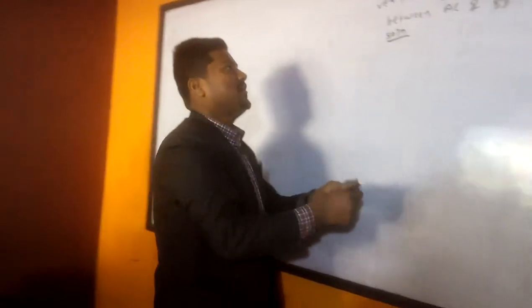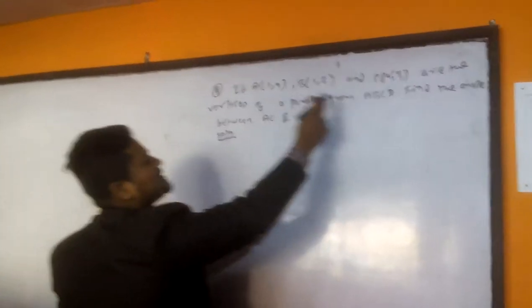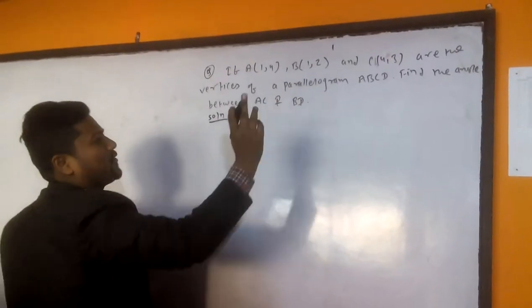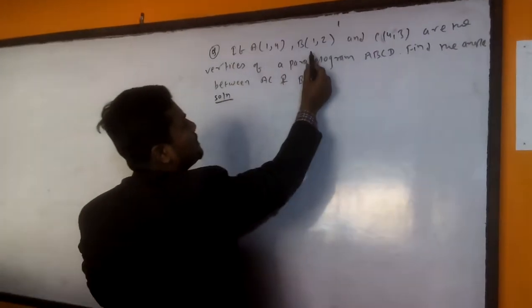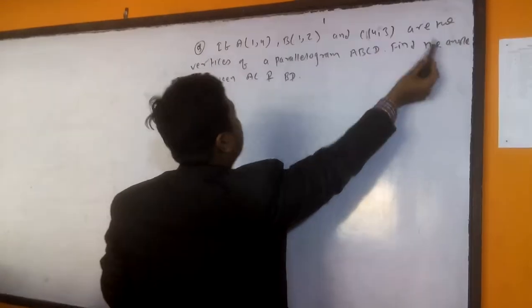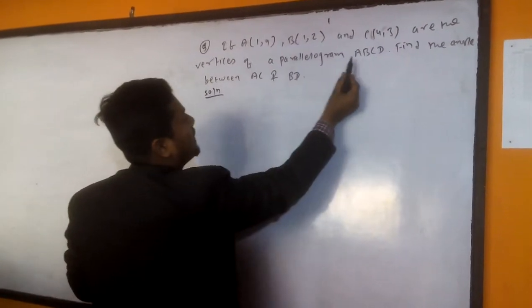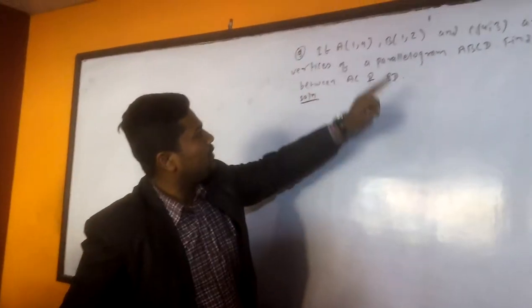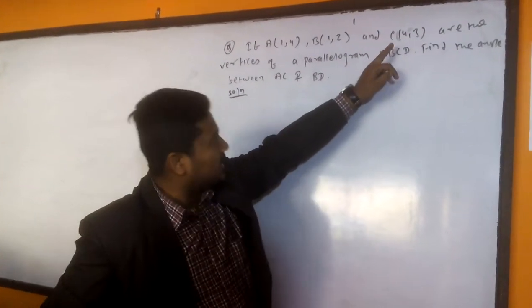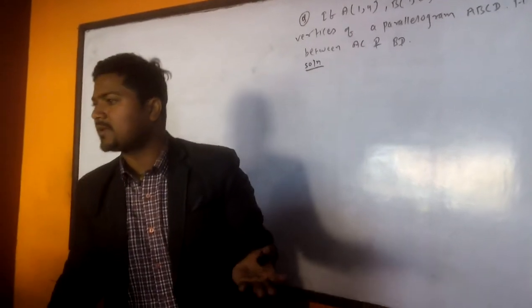Yes sir. Okay, now, ladies and gentlemen, A, B, C are the vertices of the parallelogram ABCD. If A, B and C are the vertices of the parallelogram ABCD, I think you are thinking A coordinate is 1 comma 4, B coordinate is 1 comma 2, and C coordinate is 4 comma 3, but D coordinate are not given. Am I right?